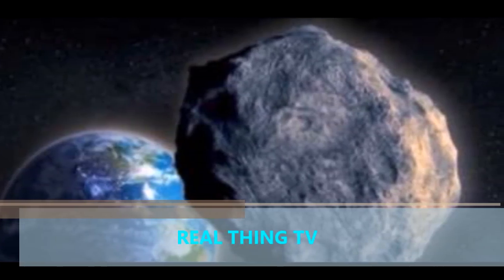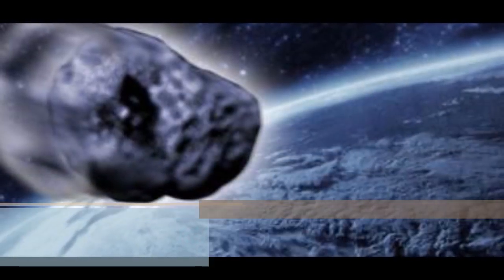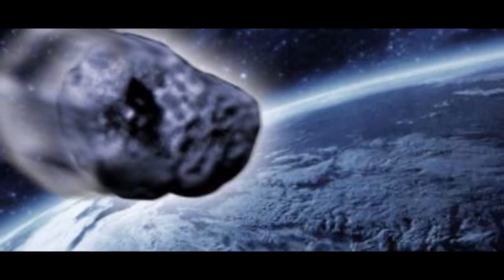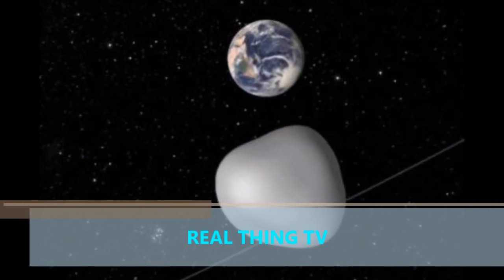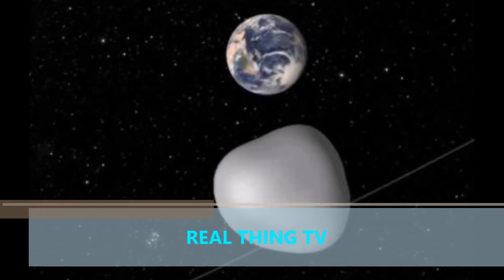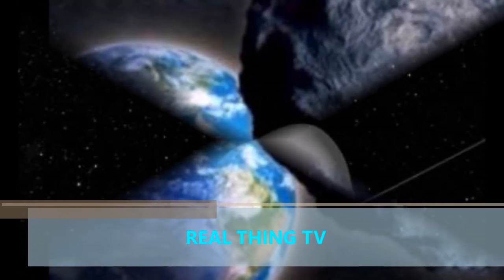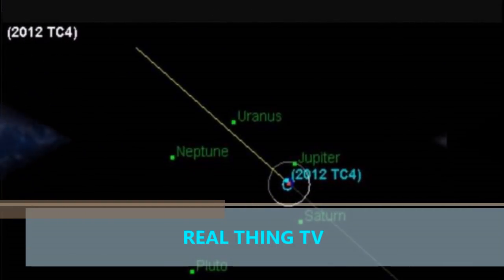Michael Kelly, program scientist and NASA headquarters lead for the TC4 observation campaign, said scientists have always appreciated knowing when an asteroid will make a close approach to and safely pass the Earth because they can make preparations to collect data to characterize and learn as much as possible about it.